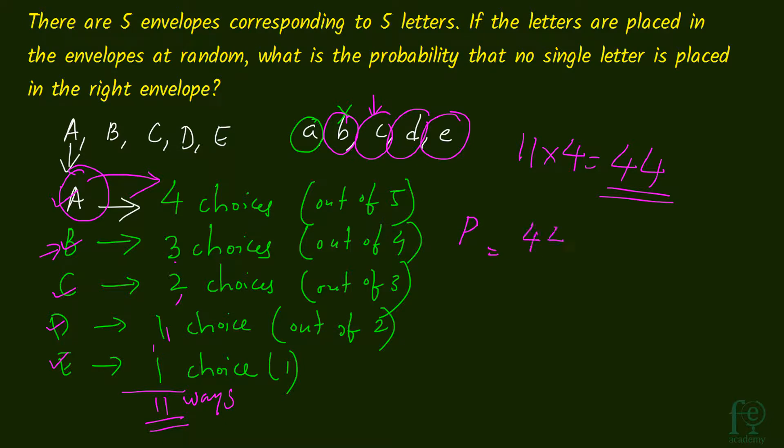So our probability will be equal to 44 divided by 120. In any case, if 6 letters or 7 letters come, this manual approach takes a lot of time. So we can study a formula for doing these kinds of questions — this formula is known as the formula of derangement.